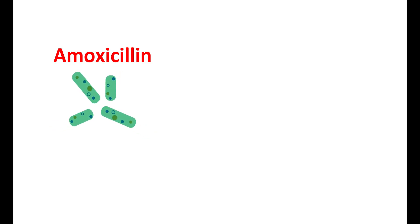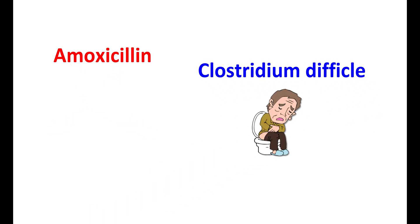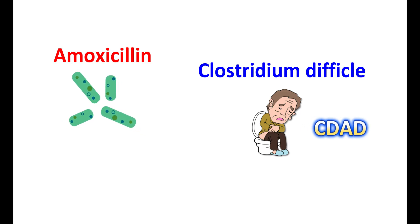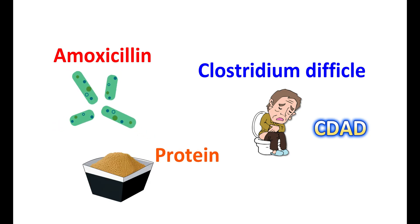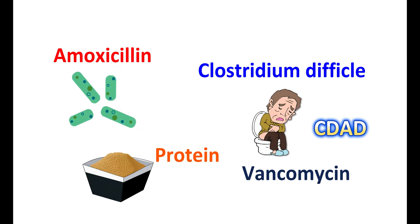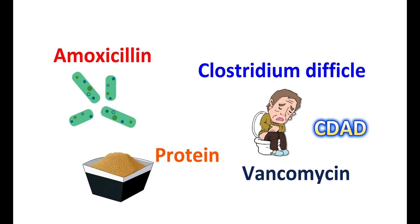Amoxicillin can inhibit gut flora, the protective bacteria in the gut wall. This may lead to an opportunistic infection by Clostridium difficile, which can produce diarrhea — commonly known as CDAD (Clostridium difficile-associated diarrhea) — and can be observed up to two months after treatment. In case of diarrhea, fluid and electrolytes should be properly managed and protein supplementation taken. In severe cases, vancomycin may be used to treat the Clostridium difficile infection. Amoxicillin should not be used in the absence of any suspected bacterial infection, and if superinfection with bacterial or fungal pathogens occurs during therapy, the medication should be avoided.